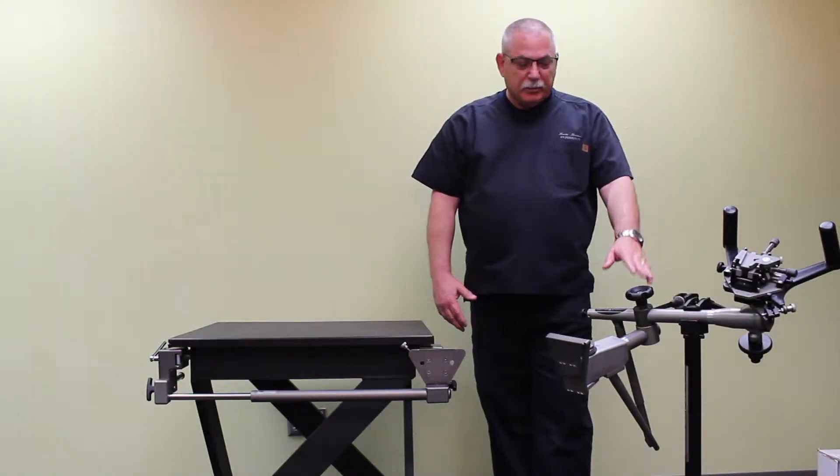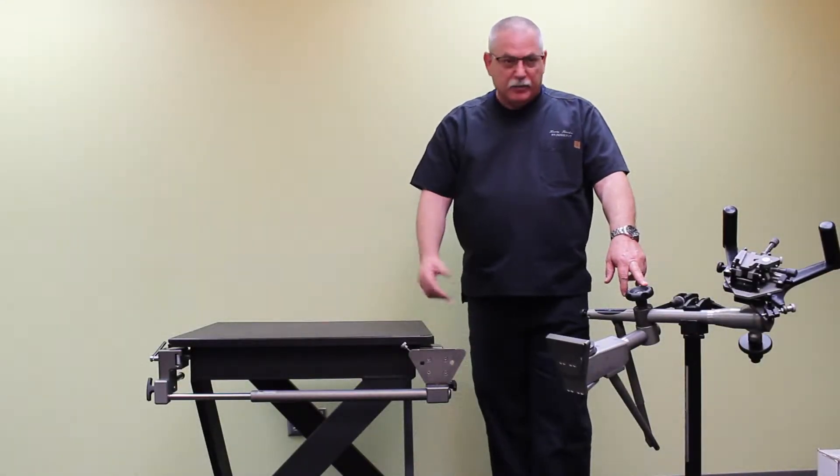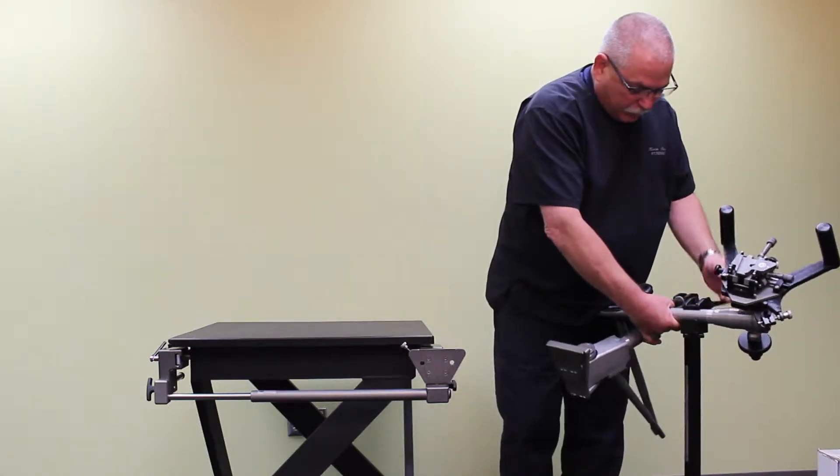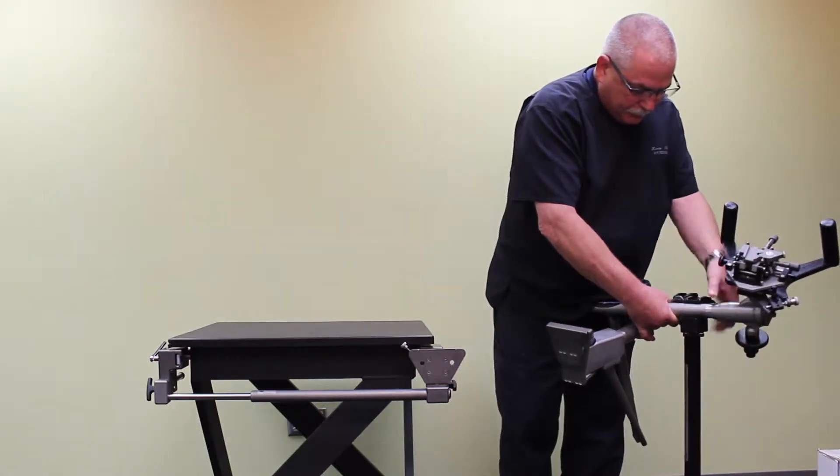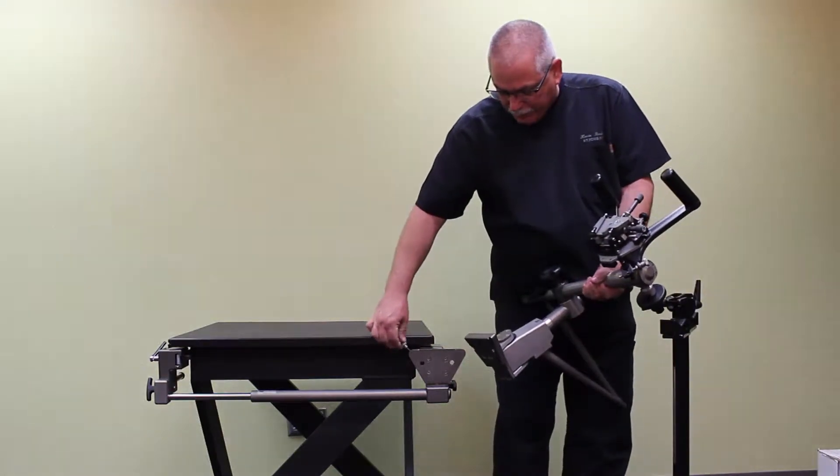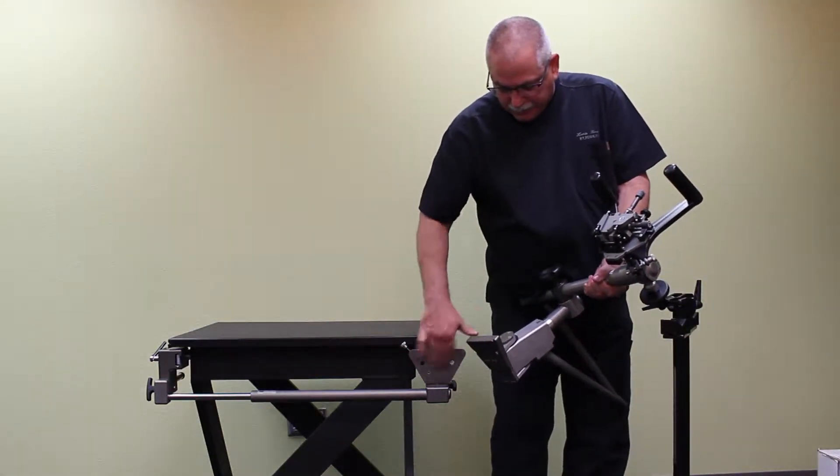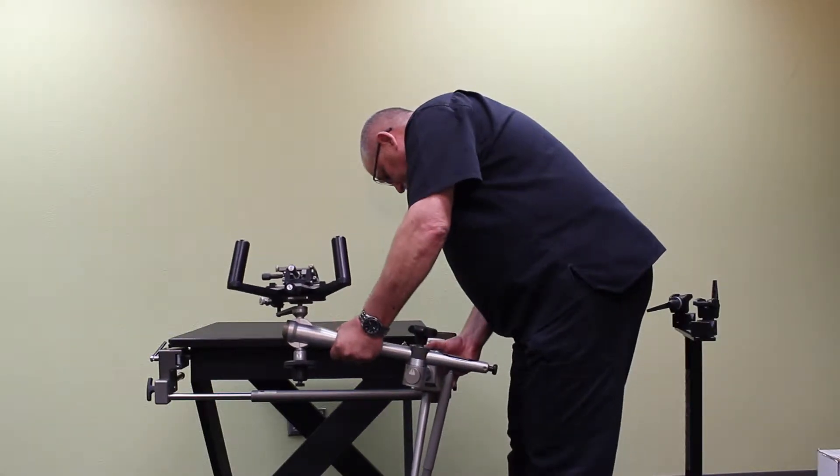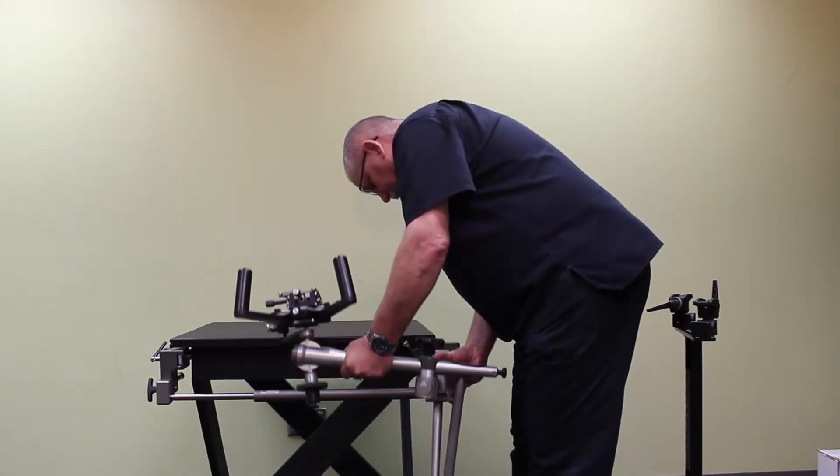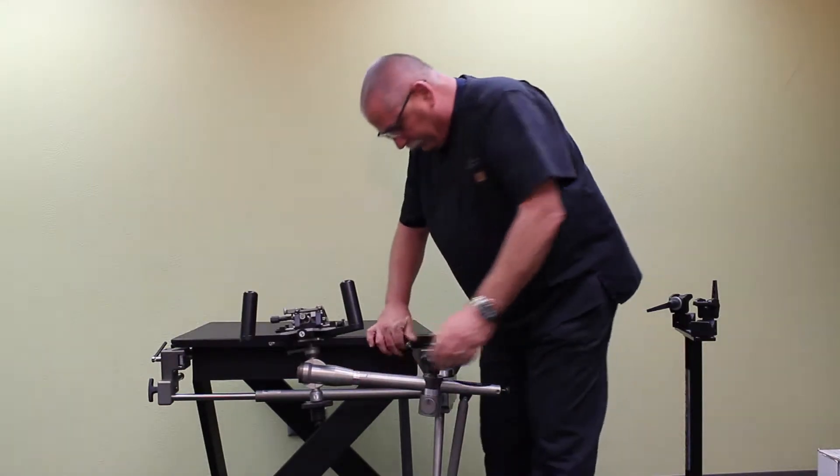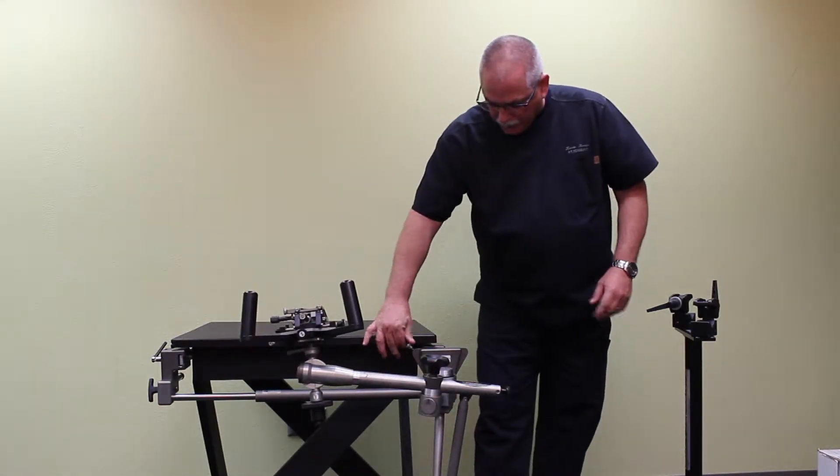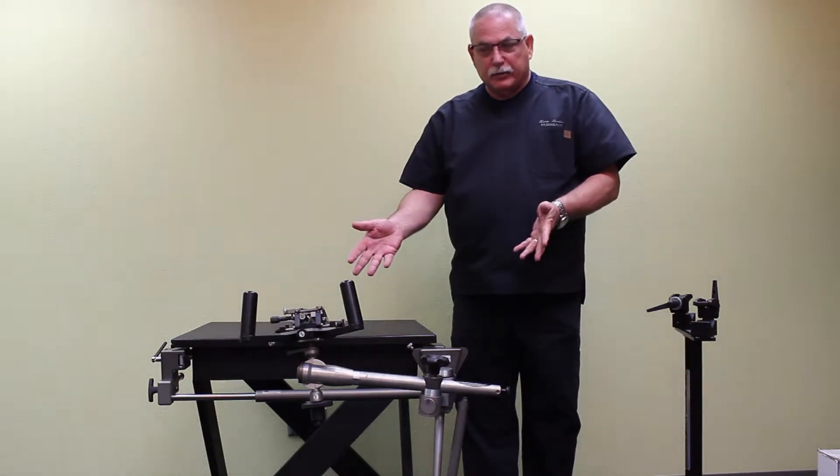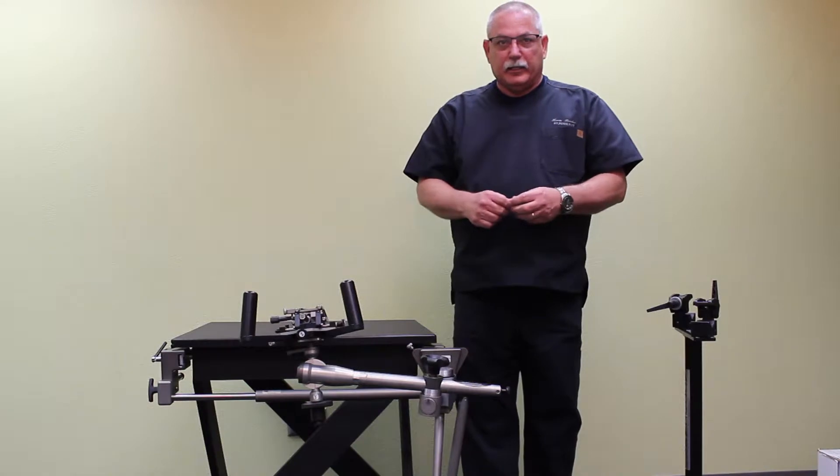Next, we're going to attach the micro touch stabilizer onto the table mount. I have it on the transportation stand. I'll remove it from there. I've loosened this knob to allow this plate to fit down into this plate. Now I'm tightening the knob here, and my micro touch stabilizer is attached to the table and ready to use.